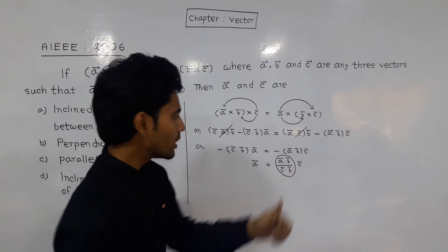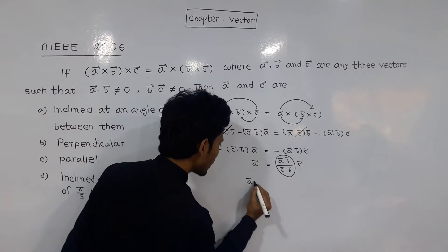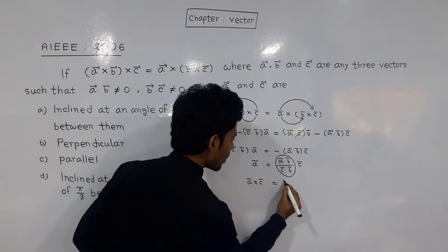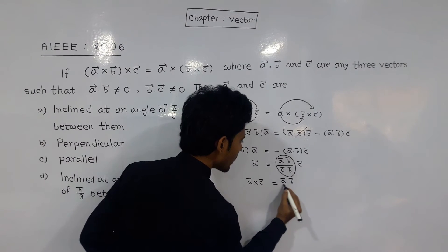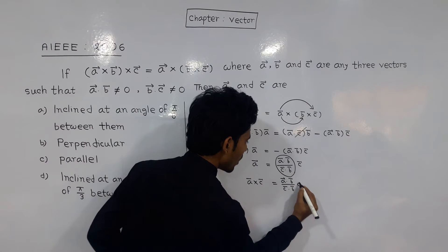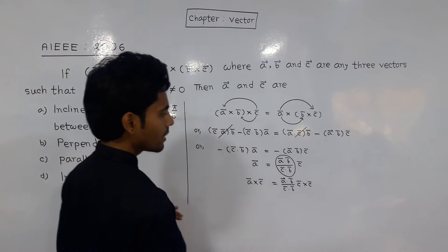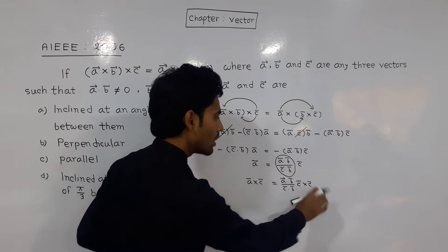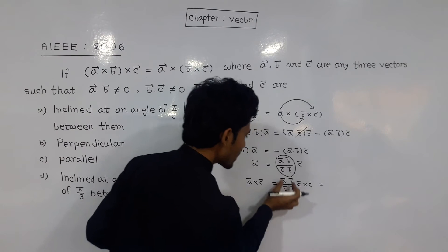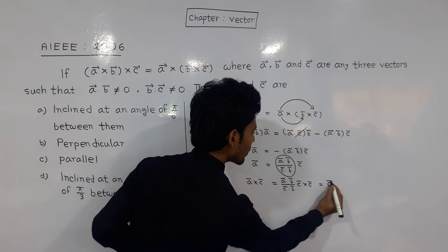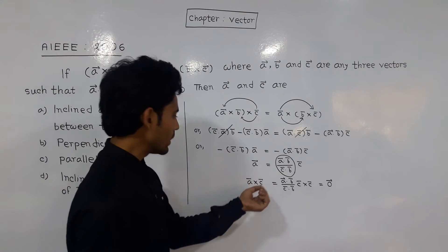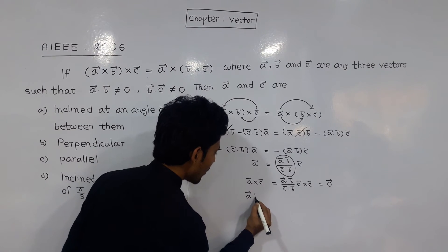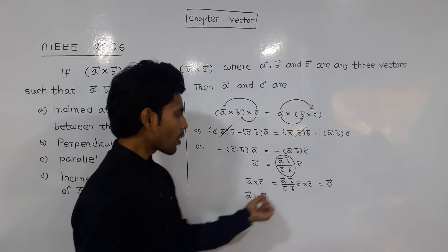Since we have scalar quantities here, let me take the cross product of both sides with c vector. So a cross c equals a dot b by c dot b times c cross c. But c cross c equals zero vector, so a cross c equals zero vector.